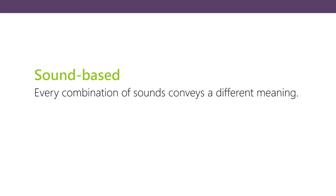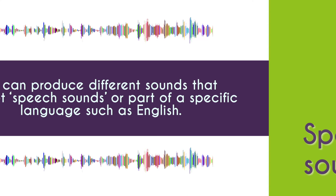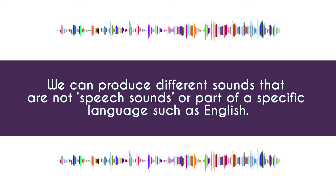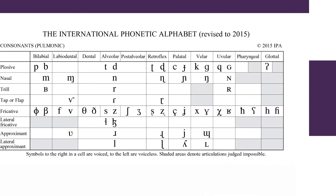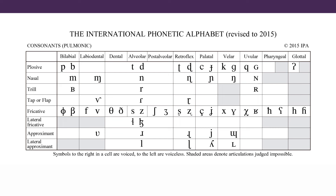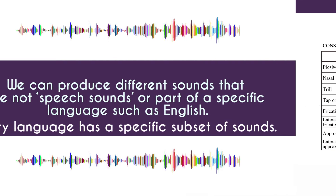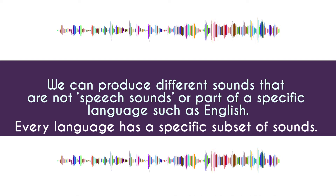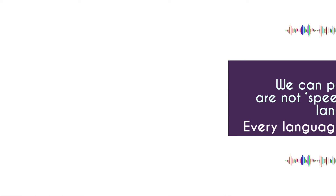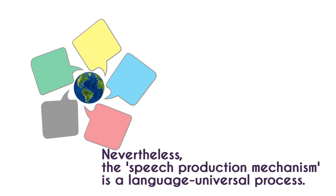This video is about the very mechanism by which we produce sounds — we should call them speech sounds because they are sounds that are part of speech. We can make sounds that are not part of speech, for example a click, which in English is not a speech sound, though in some languages it is. Every language uses a subset of all the sounds we are anatomically capable of producing.